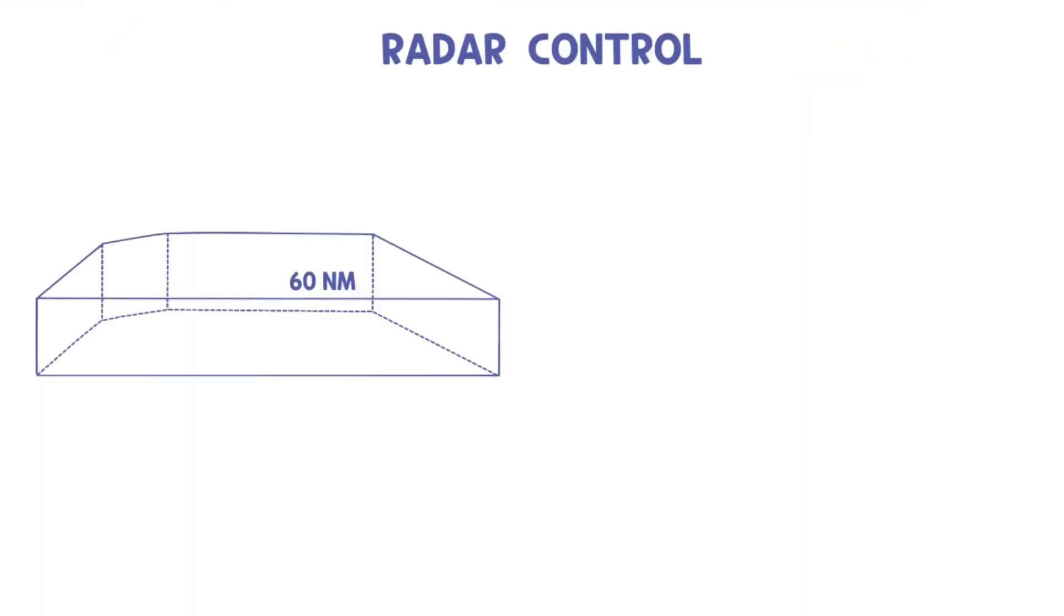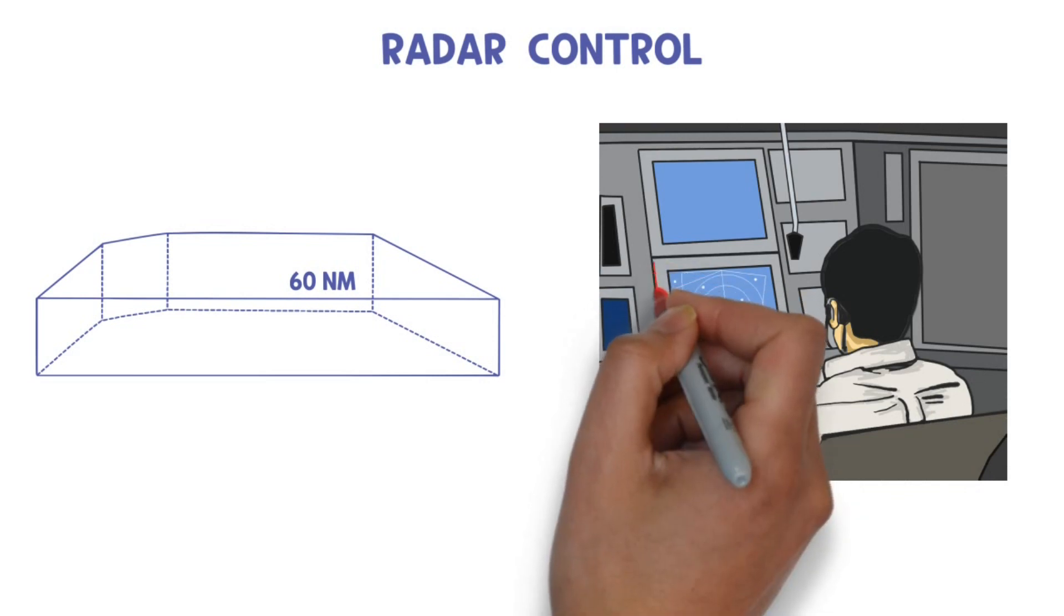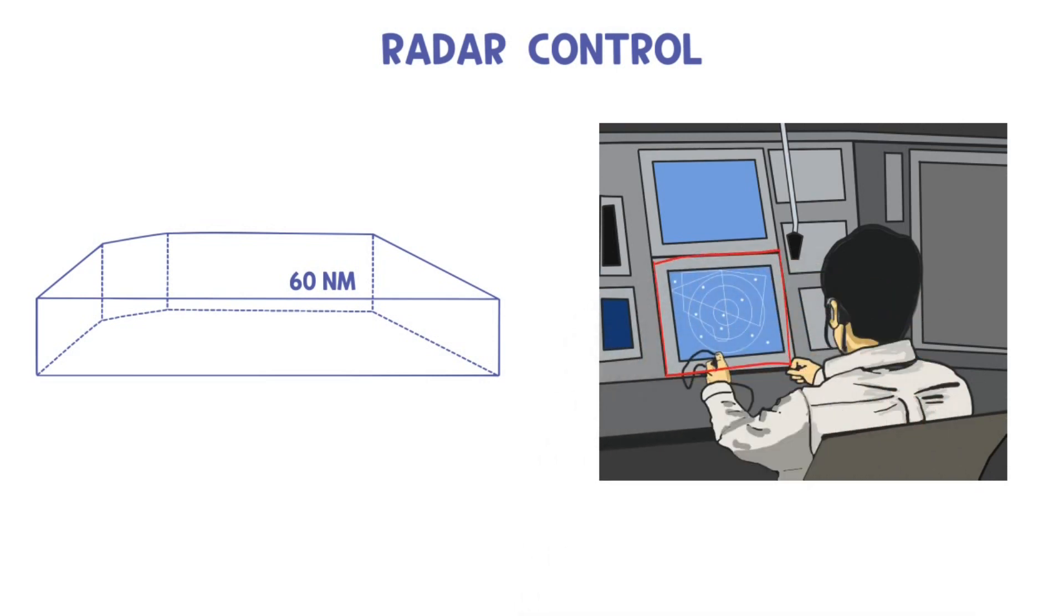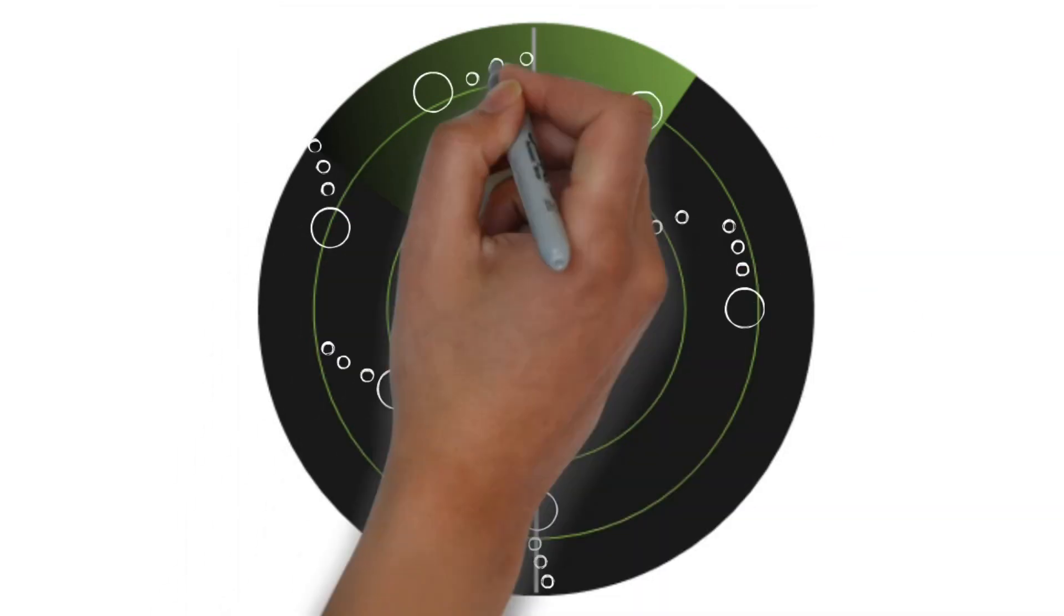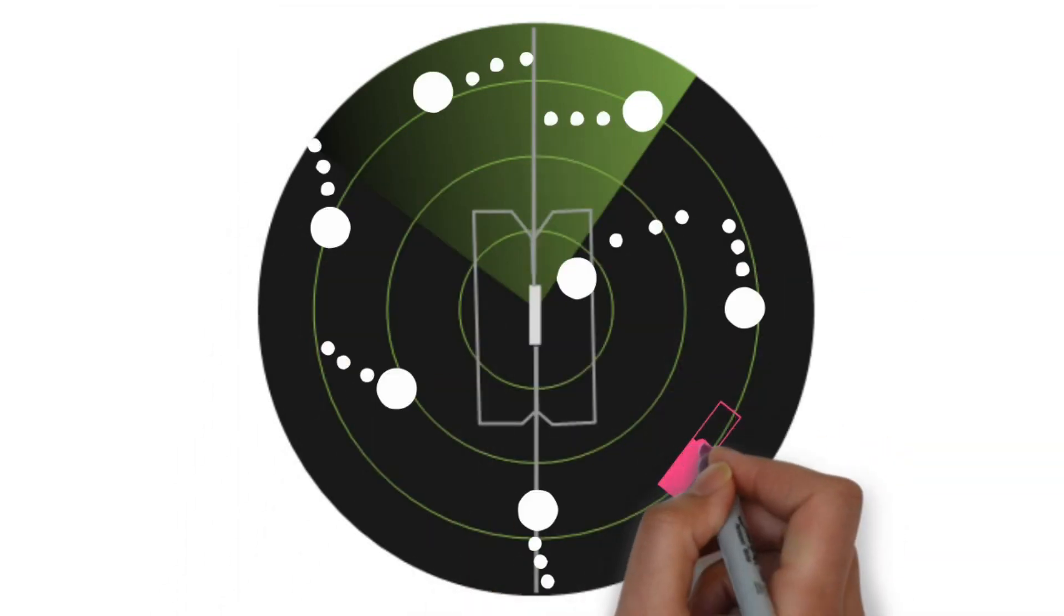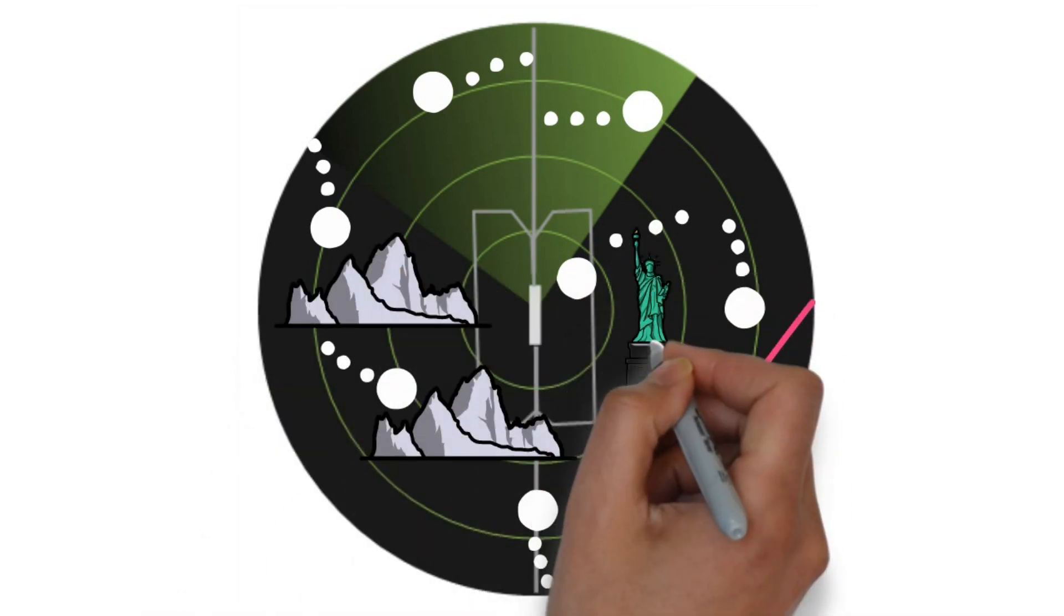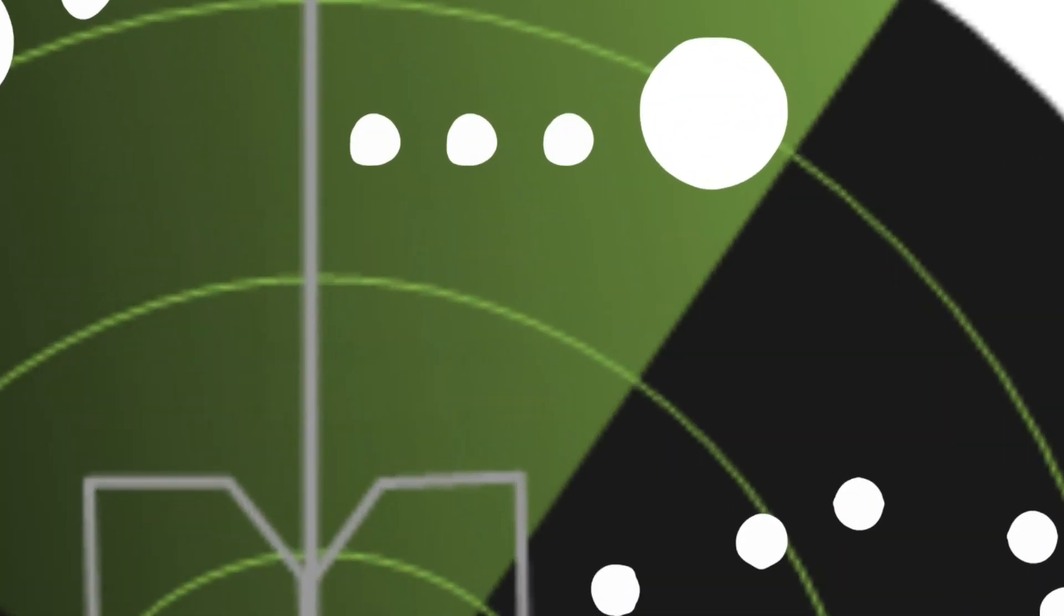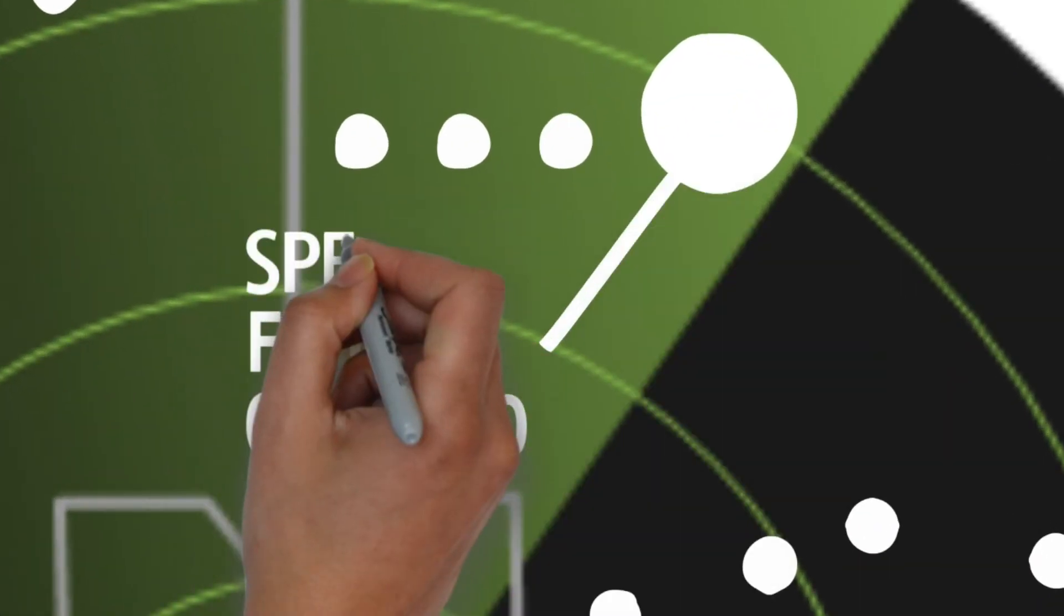In fact, radar controllers that control a large area ironically focus on just one radar scope. Within that one radar scope, there are numerous aircrafts to be controlled and signs indicating nearby airports, mountains, and obstacles. The radar scope displays the aircraft's heading, altitude, speed, and call sign information.